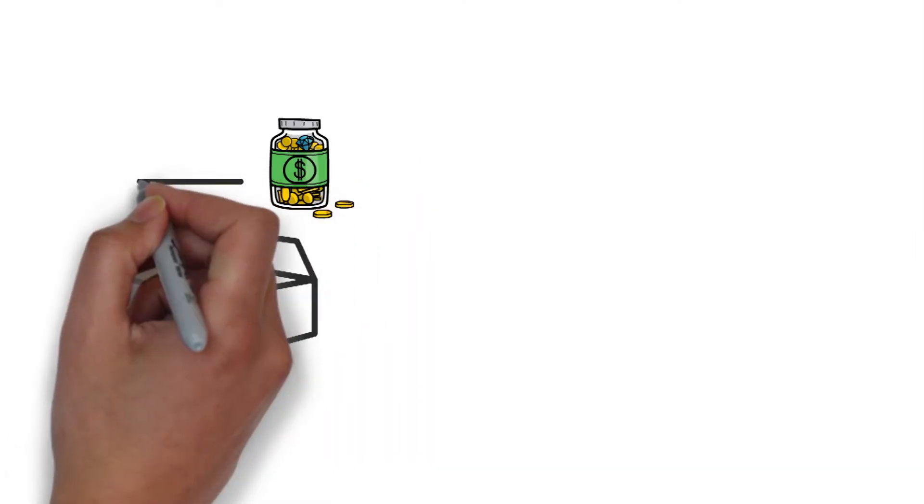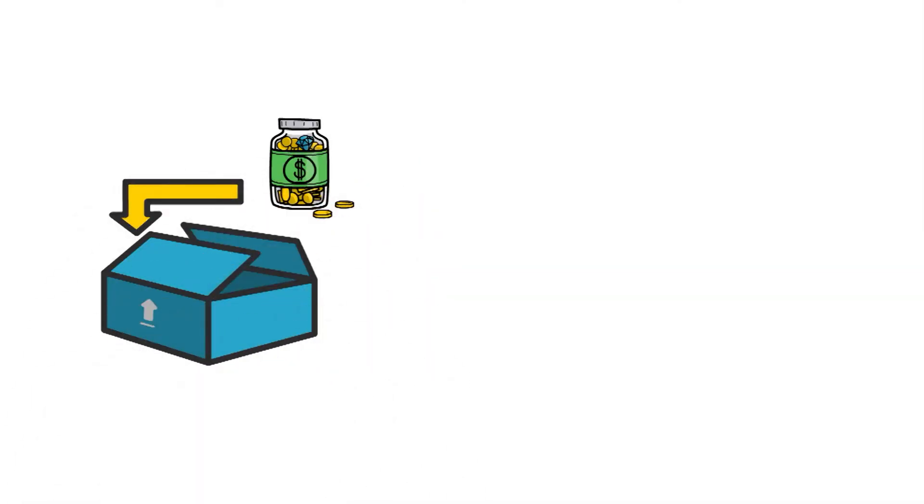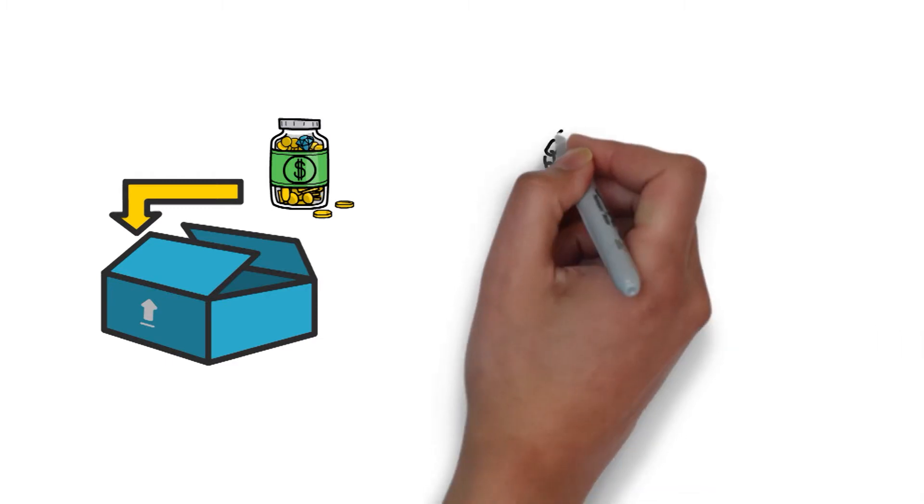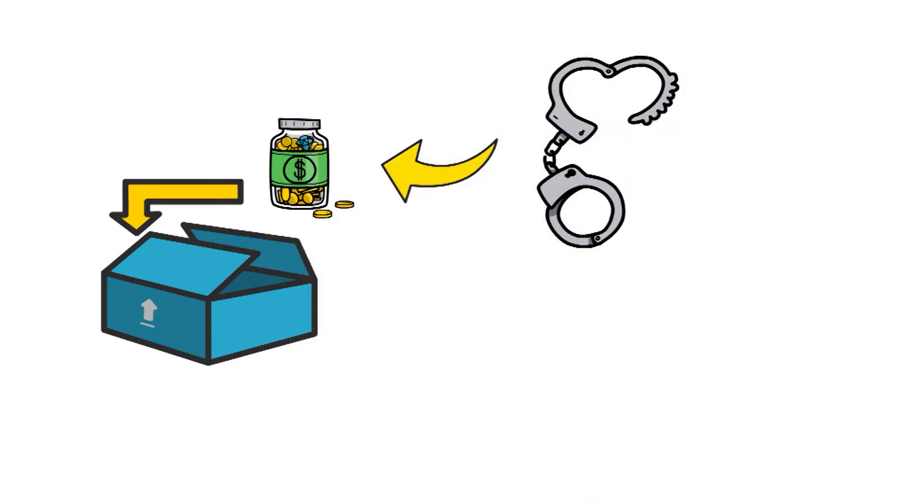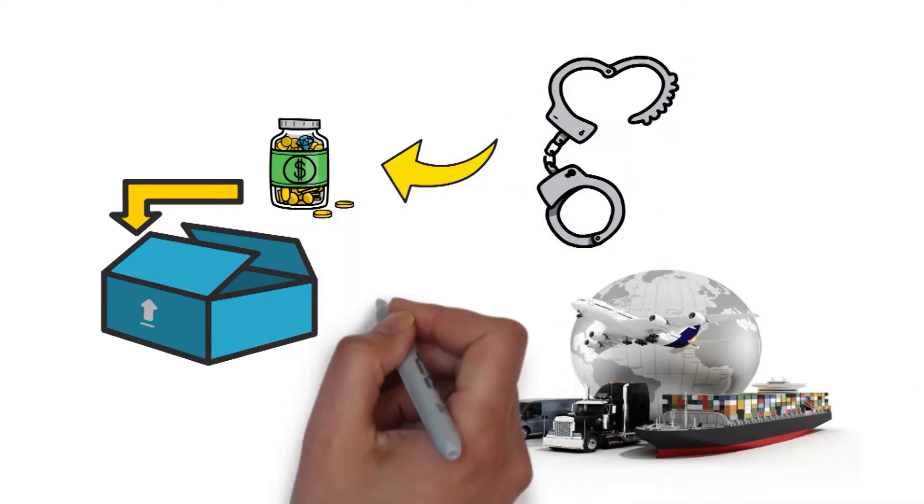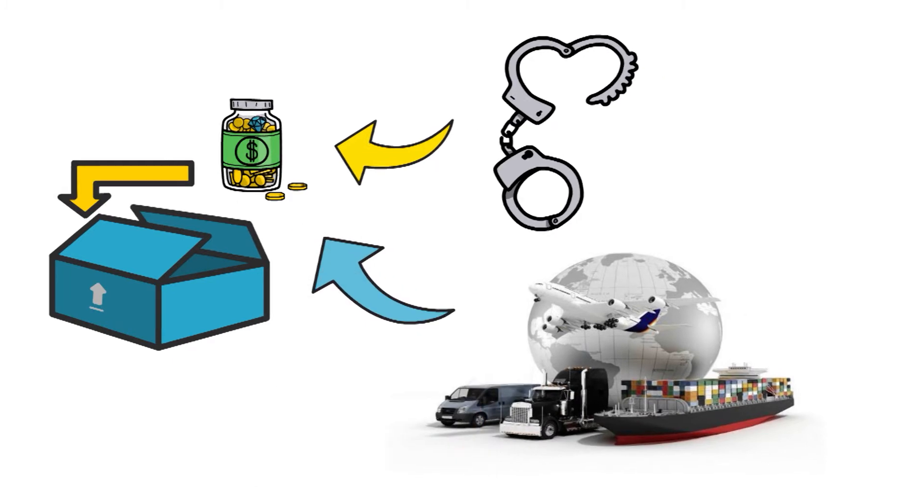Simply put, it is the process of hiding the illicit origin of the funds, initially generated by a crime, through the physical movement of goods in the trade system.